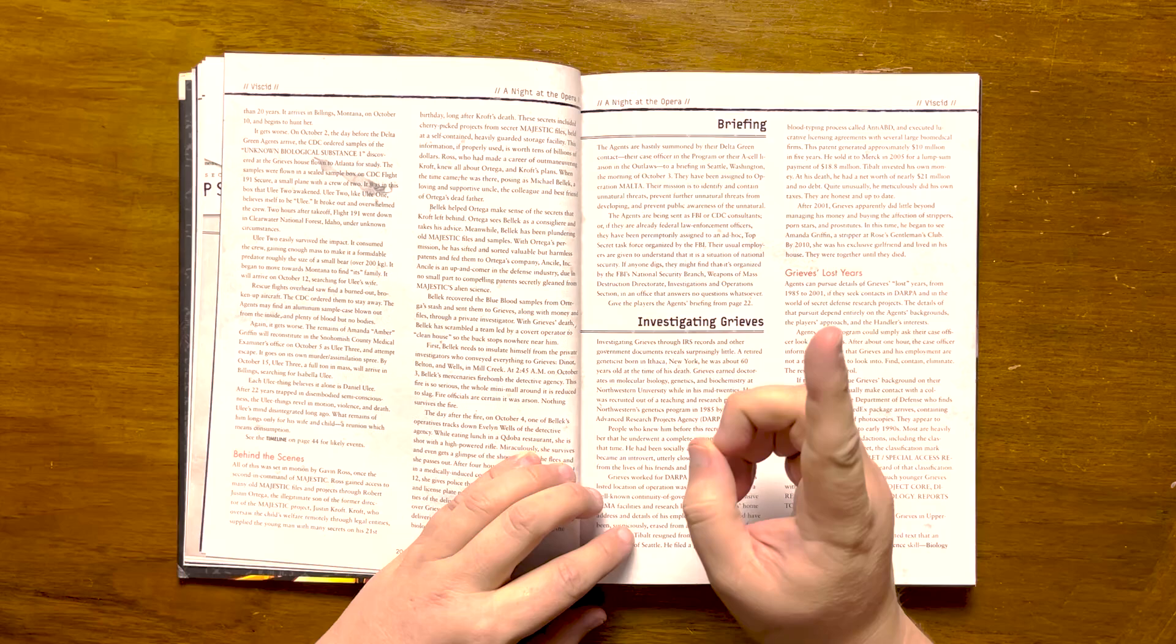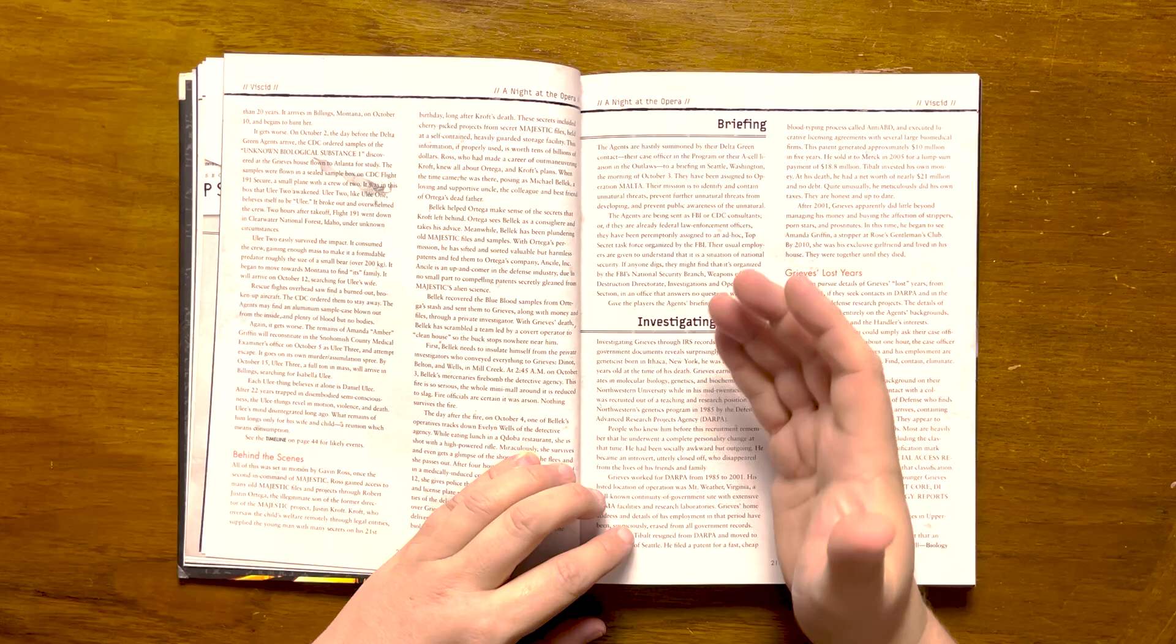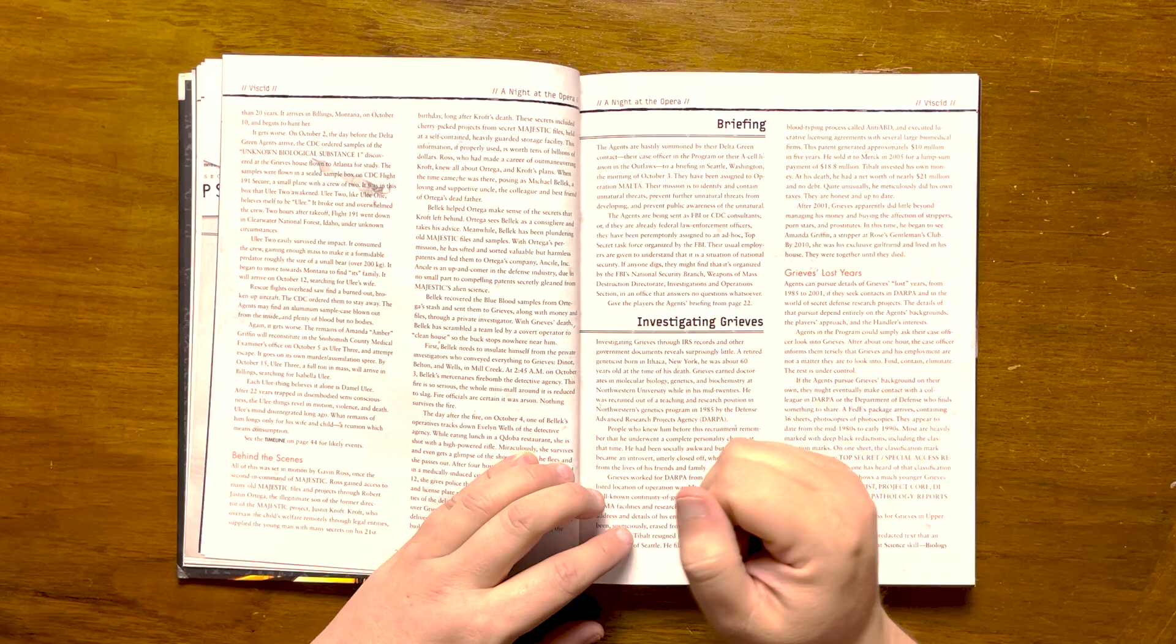The remains of Amanda reconstitute at the Snohomish County Medical Examiner's Office, where her corpse is waiting to have an autopsy performed on it, and goes on a killing spree. By October 15th, it will be around a ton in mass and arriving in Montana, each Uli thing believing that they are the one true Daniel Uli. A reunion with his wife and child can only mean consumption.